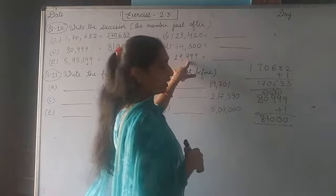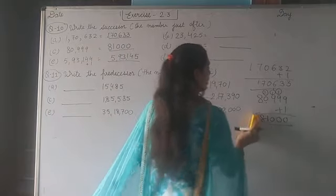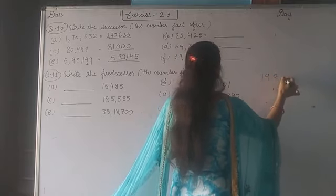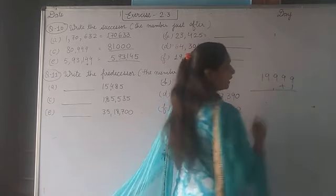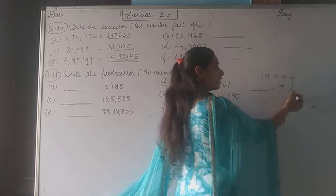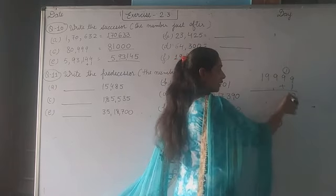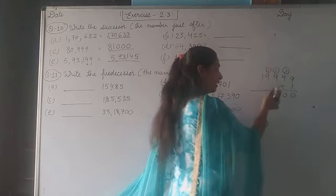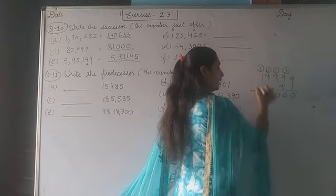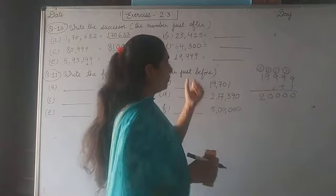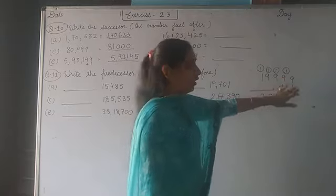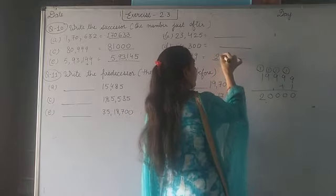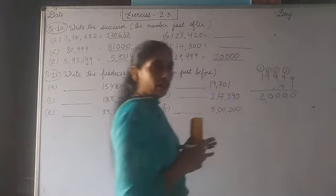See the last part. Here is given nineteen thousand nine hundred ninety-nine. When you add one, 9 plus 1 is 10, one carry. Again 9 plus 1 is 10, one carry. 9 plus 1 is 10, one carry. 9 plus 1 is 10, one carry. Answer is 1 plus 1 equals 2. So the number was nineteen thousand nine hundred ninety-nine, and after adding one it became twenty thousand.